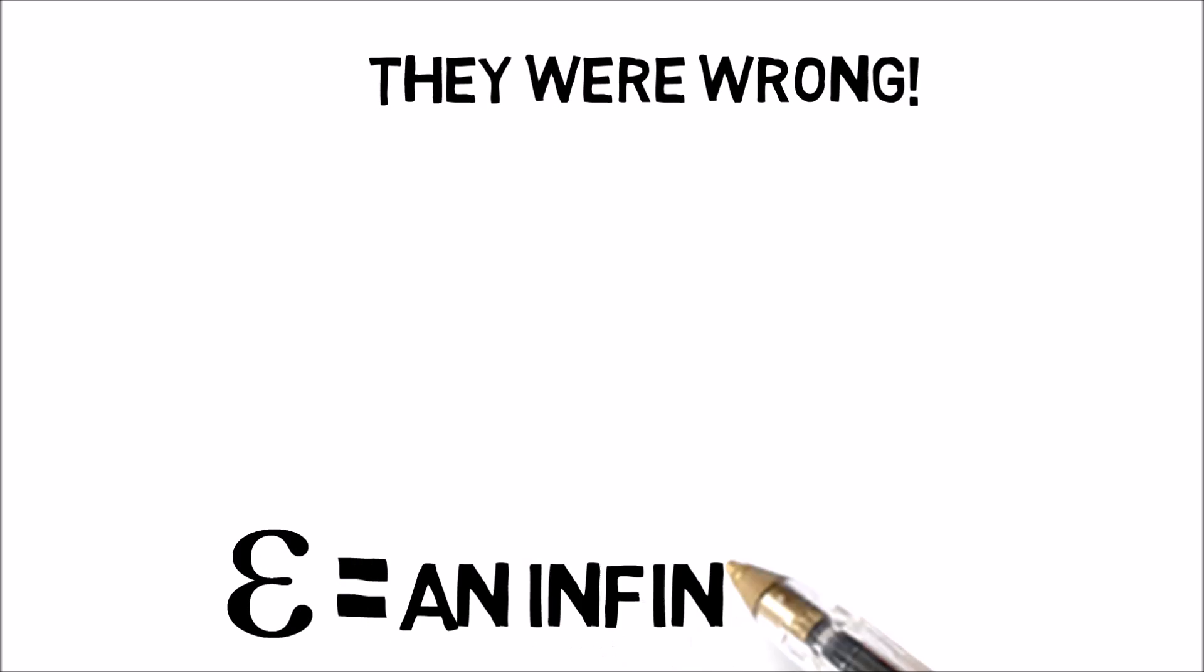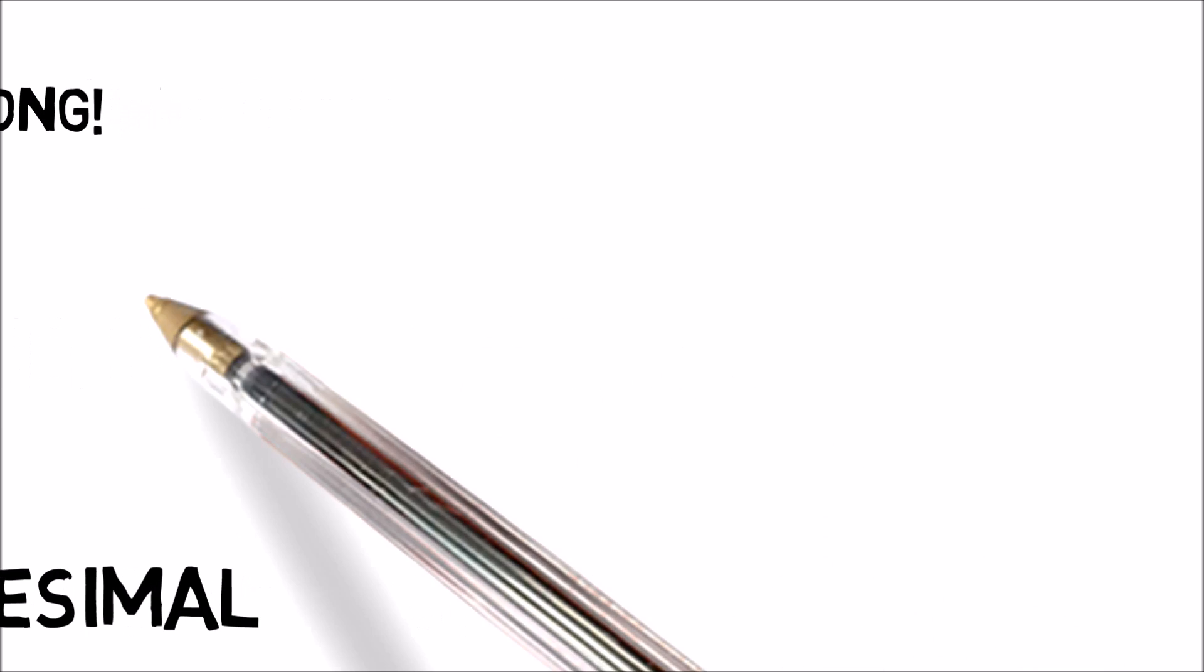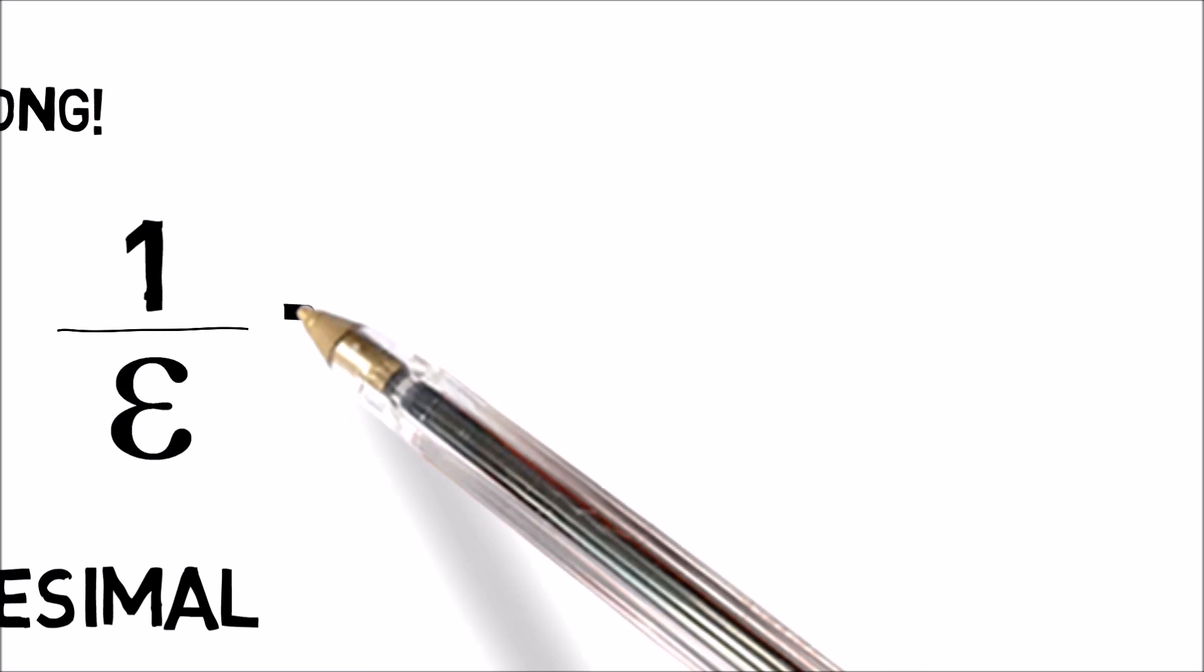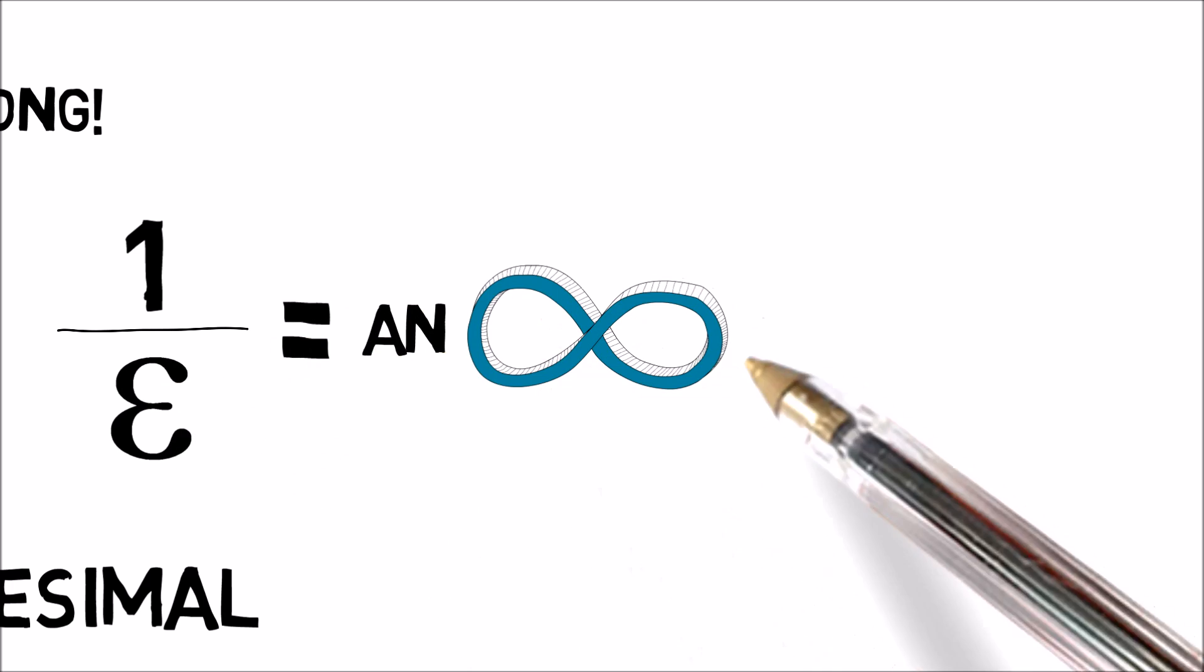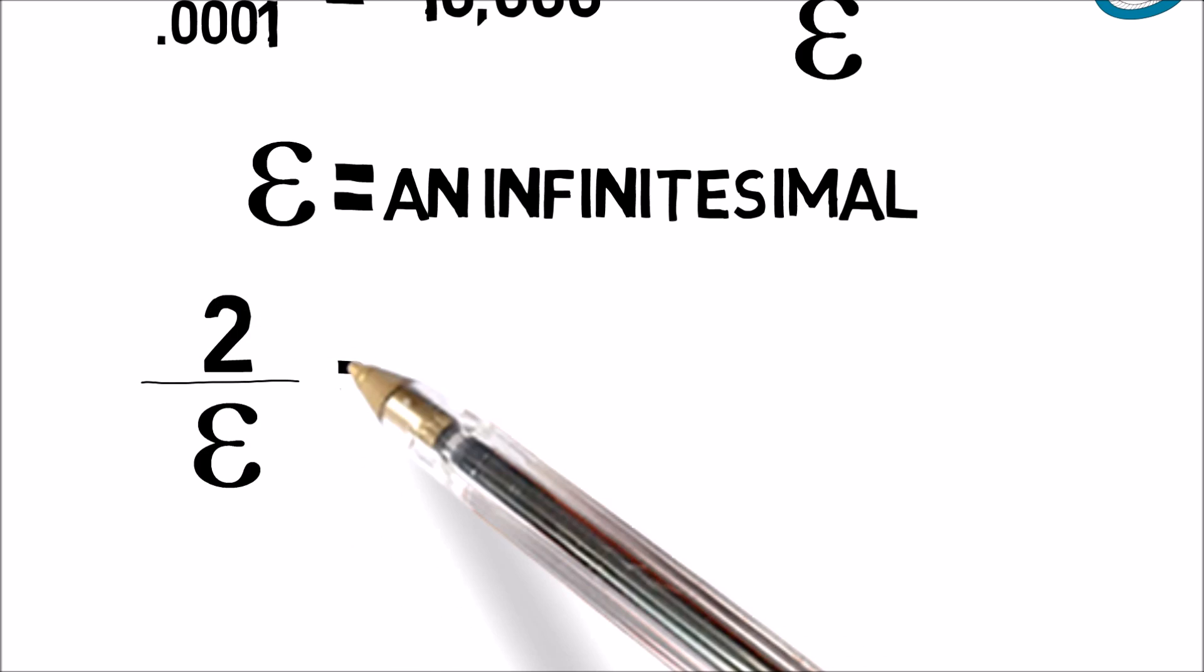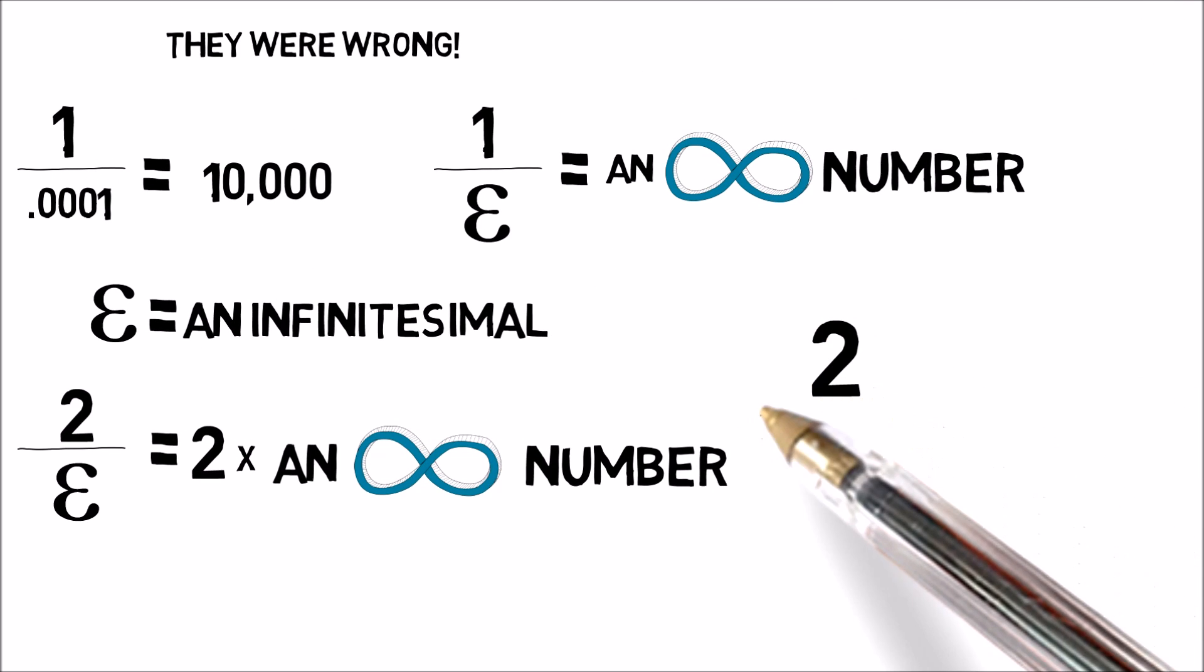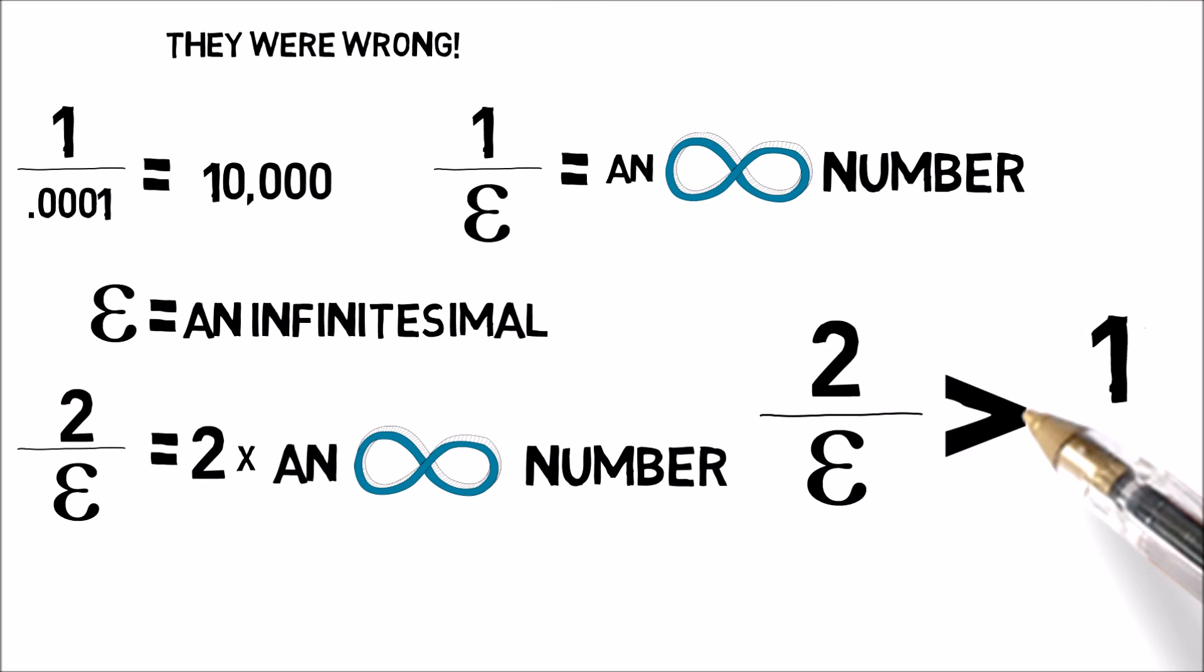Epsilon is an infinitesimal. And you know that one divided by a really small number is a larger number. So what happens if we take one and divide it by epsilon? We get an infinitely large number. What happens if we multiply epsilon by two on the bottom? Well, we get an even larger infinite number. So in the end, two times infinity is bigger than infinity.